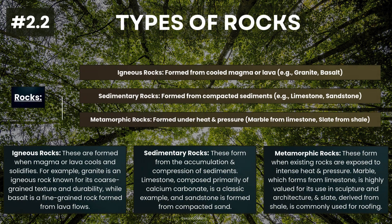Slide 2.2. Types of rocks. Rocks are classified into three main types. First, igneous rocks: these are formed when magma or lava cools and solidifies. For example, granite is an igneous rock known for its coarse-grained texture and durability, while basalt is a fine-grained rock formed from lava flows. Second, sedimentary rocks: these form from the accumulation and compression of sediments. Limestone, composed primarily of calcium carbonate from marine organisms, is a classic example, and sandstone is formed from compacted sand.